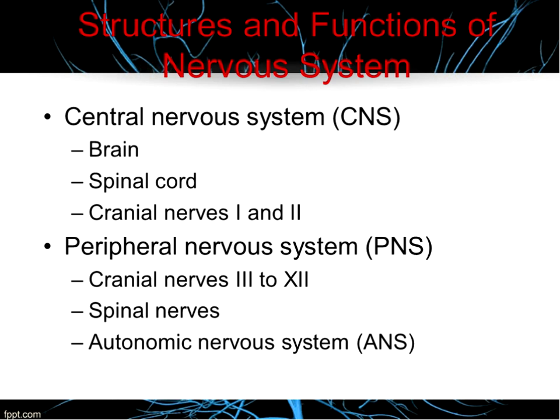When we talk about the nervous system, there are two parts. There's the central nervous system, comprised of the brain, the spinal cord, and cranial nerves 1 and 2. Then there's the peripheral nervous system, which is cranial nerves 3 through 12, the spinal nerves, and the autonomic nervous system.